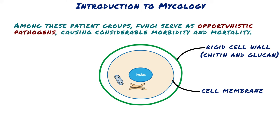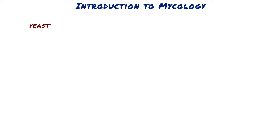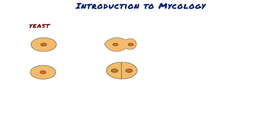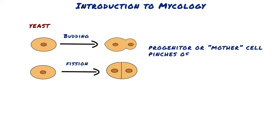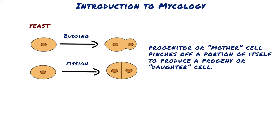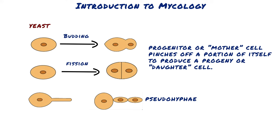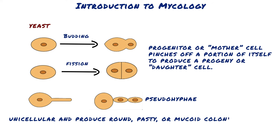Fungi may be unicellular or multicellular. The most simple grouping, based on morphology, lumps fungi into either yeasts or moulds. A yeast can be defined morphologically as a cell that reproduces by budding or fission, where a progenitor or mother cell pinches off a portion of itself to produce a progeny or daughter cell. The daughter cells may elongate to form sausage-like pseudohyphae. Yeasts are usually unicellular and produce round, pasty or mucoid colonies on agar.